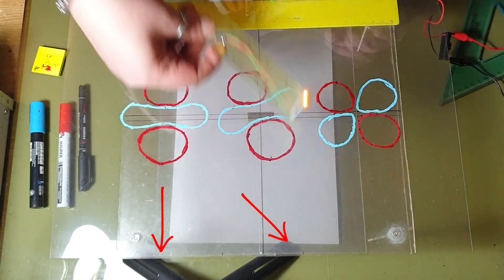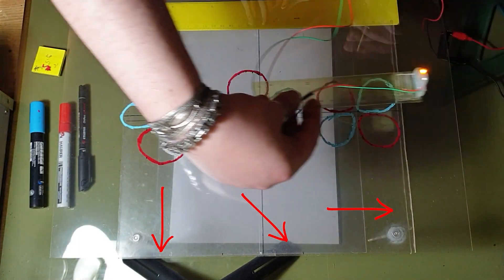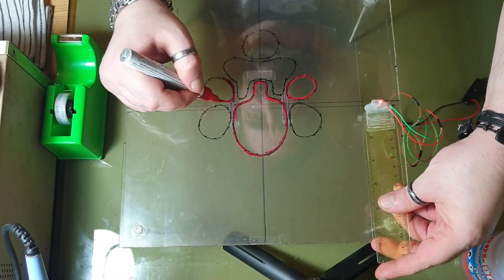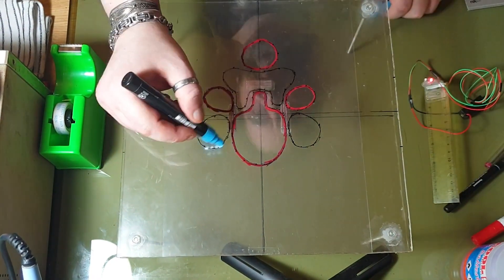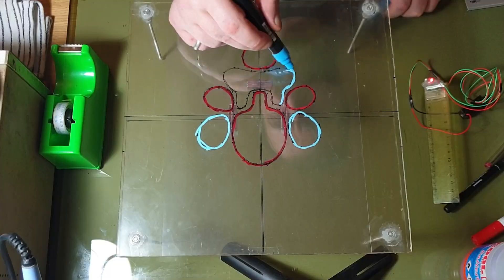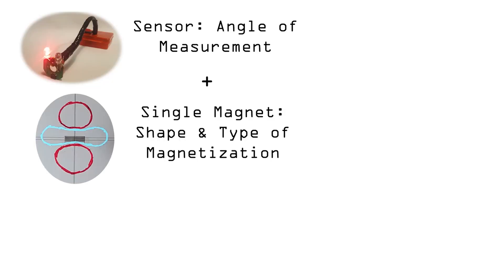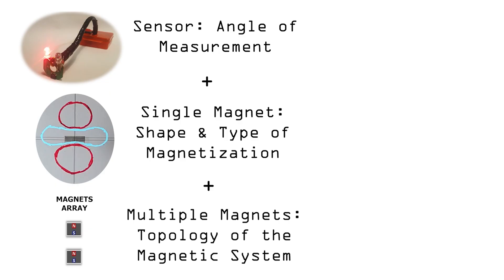Here, L corresponds to the orientation of the sensor with respect to the magnet's axis of magnetization, or of the entire magnetic system under study. And again, just as with n, we must also consider the magnet's own characteristics. For single magnets, this includes the shape and the type of magnetization. For systems of multiple magnets, we must also add the distance and relative orientation between them. In other words, the topology of the magnetic system.